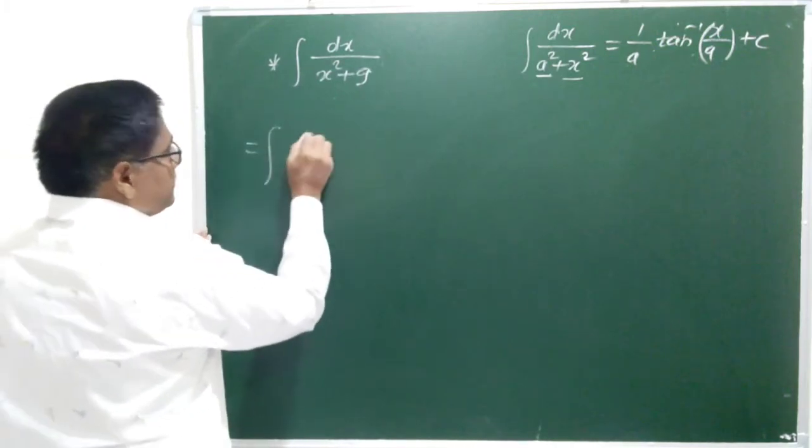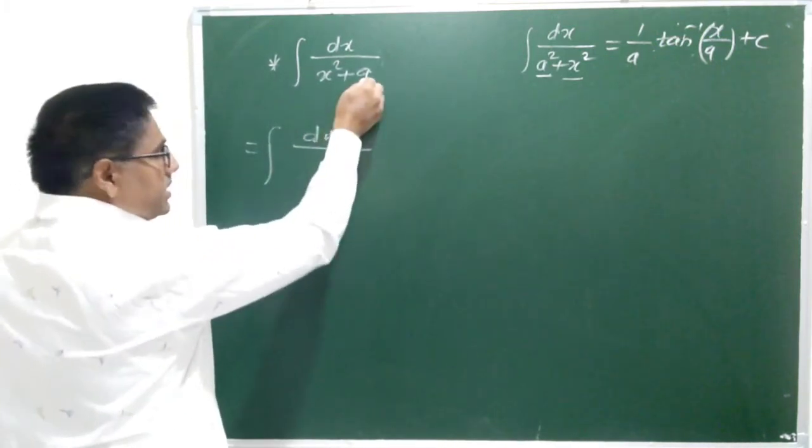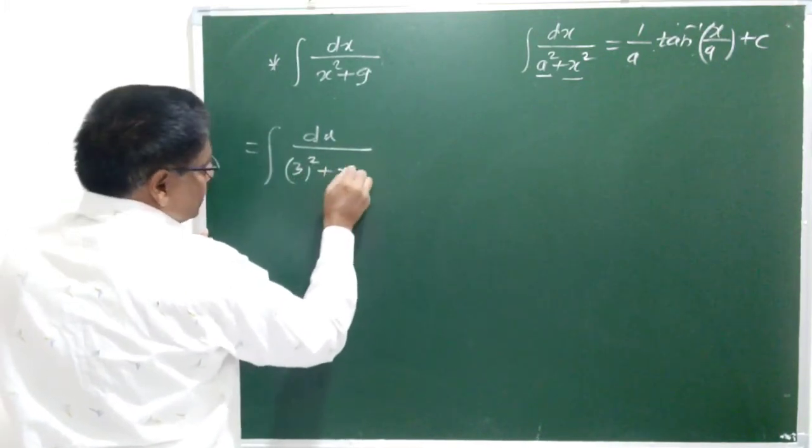let us write this function in this way. This 9 can be written as 3 square plus x square.